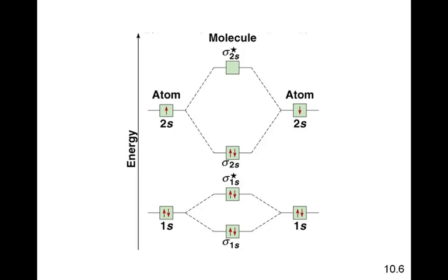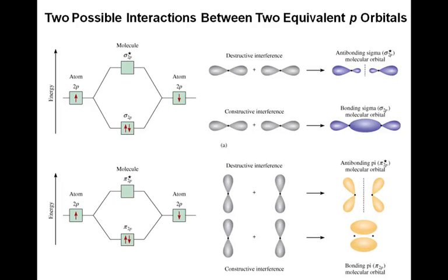Hydrogen has a bond order of one and is pretty prevalent, so the probability that diatomic lithium exists is pretty good. In fact, the Li2 molecule — diatomic lithium — has been observed. So, what happens when we start talking about molecules in which 2p orbitals overlap?